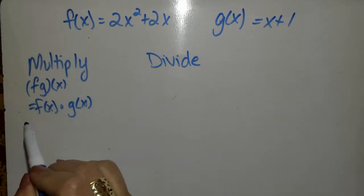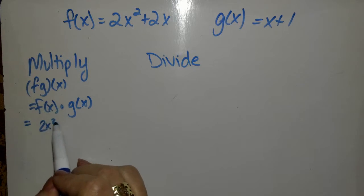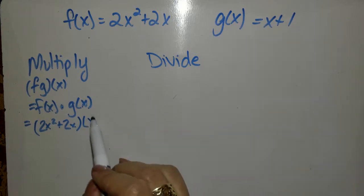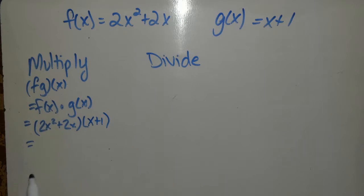So my f of x is 2x squared plus 2x, I'm going to put that in parentheses, multiplied to g of x, which is x plus 1. All you're going to do is distribute.